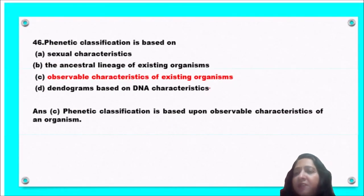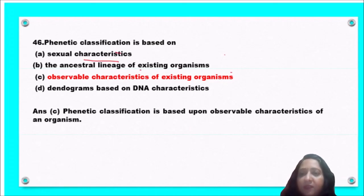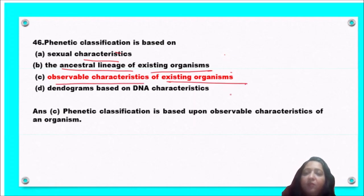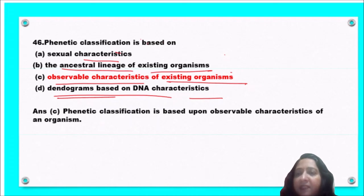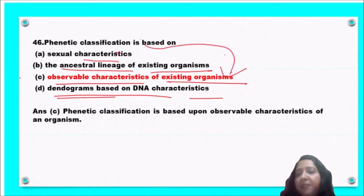Next question: phenetic classification is based on — sexual characteristics, ancestral lineage of existing organisms, observable characteristics of existing organisms, or dendrograms based on DNA characteristics? Phenetic classification is based on observable characteristics of existing organisms. So option C is the correct answer.